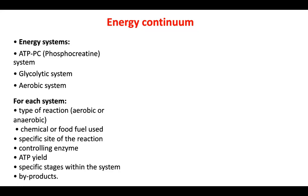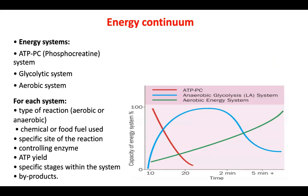Your Cornell notes are going to be on different aspects of what I'm going to tell you. The first thing I want you to do is draw out this visual representation of the three energy systems called the energy continuum. So red is the ATP-PC system, blue is anaerobic glycolysis or the glycolytic system, and green is the aerobic energy system.